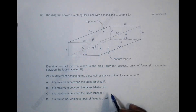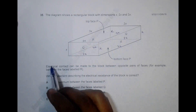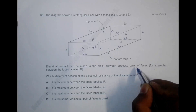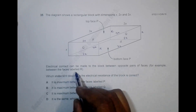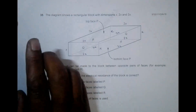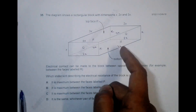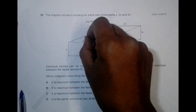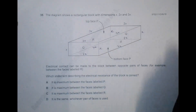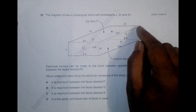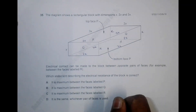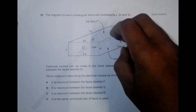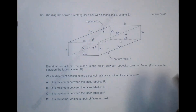It says electrical contact can be made to the block between opposite pairs of surfaces — for example, between the faces labeled R, where we can connect a wire on each opposite face. Similarly, contacts can be made between the Q faces and between the P faces.